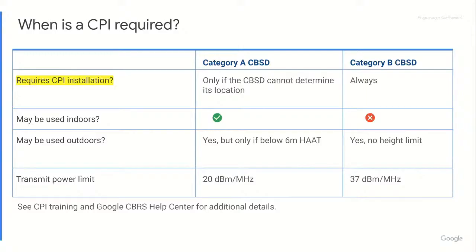Category B CBSDs always need CPI signing. For those of you who are new to CBRS, here's a quick difference between a CAT A and a CAT B. At a very high level: CAT A can be used indoors, CAT B cannot. CAT A can be used outdoors, but they both can be used outdoors.